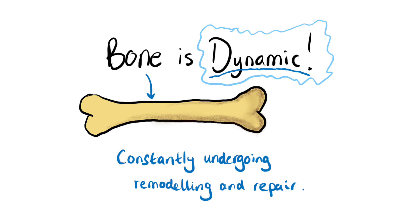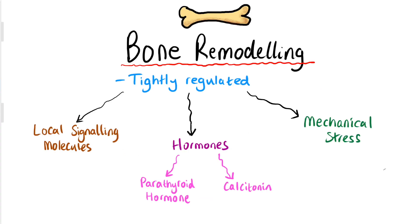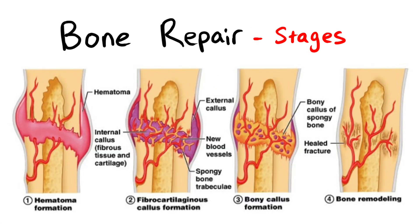To summarise, bone remodelling and repair are both dynamic processes that ensure the integrity and functionality of the skeletal system. These processes are regulated by a complex interplay of factors and involve the coordinated action of specialised cells. When bones are injured, the body mobilises repair mechanisms to heal and restore them, often with the assistance of clinical interventions where necessary.